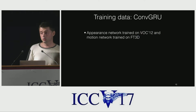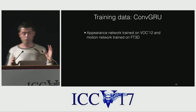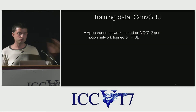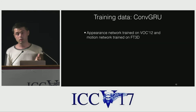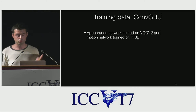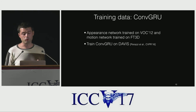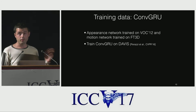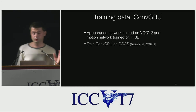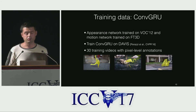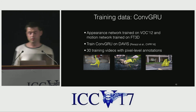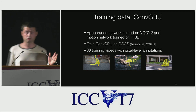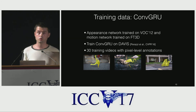To train our model, we fixed the weights of the appearance and motion networks — pre-trained on Pascal VOC and FT3D respectively — due to memory constraints, and only train the visual memory module. We use the training set of the Davis dataset, which consists of 30 videos with pixel-accurate annotations of the moving objects, so we can learn our model in a fully supervised way.